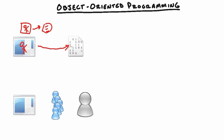With object-oriented programming, we create something called a class. Think of a class as a data model — a structure that stores data about whatever you're trying to model. In our case, we'd create an employee class. Classes contain three big things: properties, methods, and events.